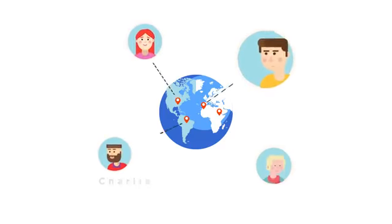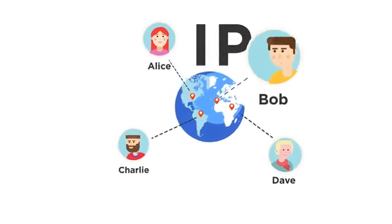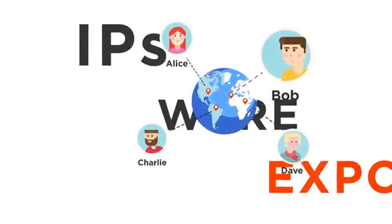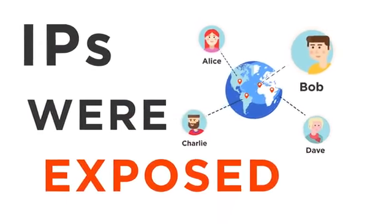Alice, Bob, Charlie, and Dave all have at least one thing in common: their IP addresses were exposed.